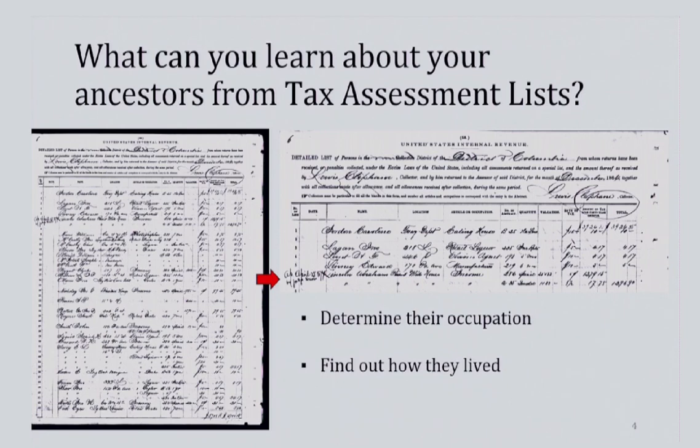A researcher may also discover more about how their ancestor lived. The tax assessment list can tell you what an individual owns and how successful or not they were in their business endeavors. You can track their progress over the course of these ten years to discover how they fared during the war and in the post-war period.